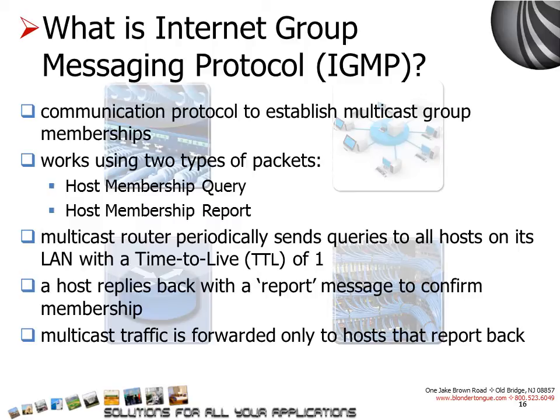What is IGMP? IGMP is a communication protocol that provides a way for hosts to report their multicast group membership to the adjacent routers. IGMP uses two types of packets: host membership query and host membership report. A multicast router periodically sends out membership queries for its subnet, and if any client exists who wants to join that group, the client replies back with a report message to confirm the membership. Once the membership is established, the multicast traffic is forwarded only to clients who are members of the multicast group. The lesson is: multicast allows you to save bandwidth, but if there is no mechanism to control the multicast traffic, then it would flood the network.